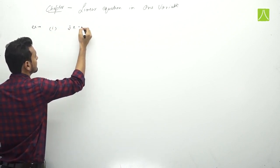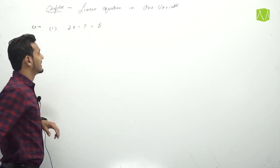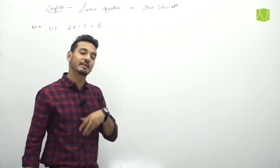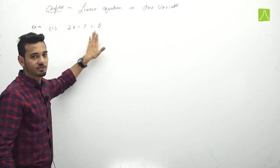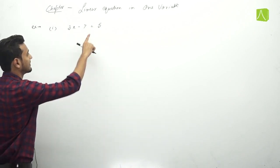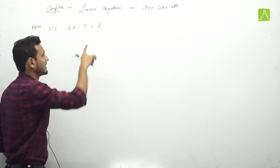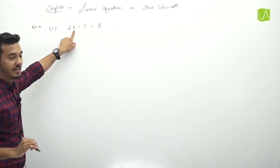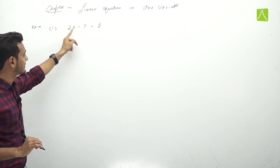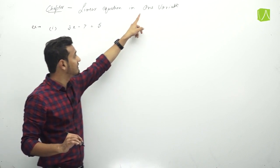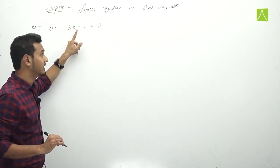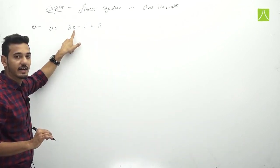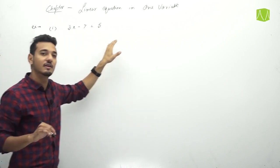First example: 3x minus 7 equals to 5. सबसे पहले हमें identify करना है कि यह linear equation in one variable है की नहीं। equals to का sign है, तो equation है। variable है — x is variable. Constants are 3, 5, and 7. Only one variable — x. And maximum power of x is 1. So this is linear equation in one variable.